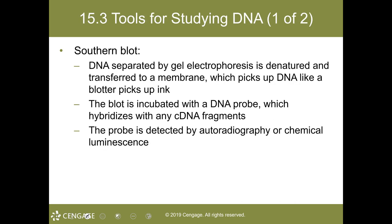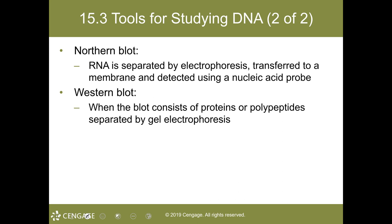Now let's get to other tools for studying DNA. With the development of recombinant DNA methods, many early findings relied on gel electrophoresis blotting methods. Using homologous probes produced from cloned DNA sequences, scientists could identify and measure specific DNA fragments and RNAs separated by gel electrophoresis. The DNA Southern blot method, named after Edwin Southern, allowed investigators to discriminate between normal and mutant alleles of a gene with a restriction fragment length polymorphism using a DNA probe. The Northern blot uses RNA separated by electrophoresis and transferred to a membrane to detect a nucleic acid probe, while the Western blot consists of proteins or polypeptides separated by gel electrophoresis.